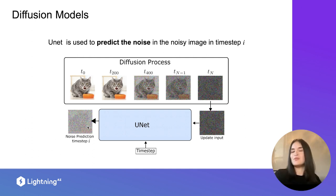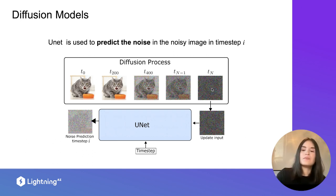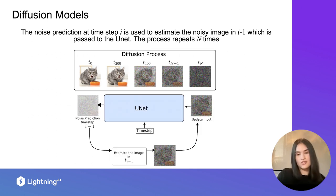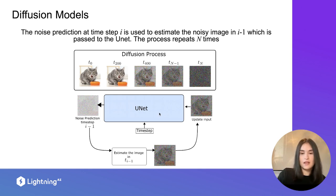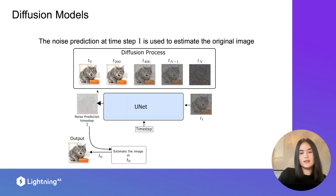Isn't asking the network to predict all the noise at once too much? It would be easier to ask it to predict the noise, take one step back to a slightly less noisy image, then give that back to the U-Net, predict the noise again, and repeat n times. Eventually, we'll be predicting the noise for the first iteration and get an estimate of the original image — and then we have Ramon back!